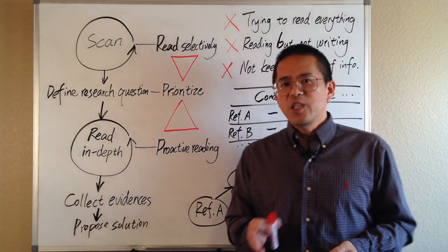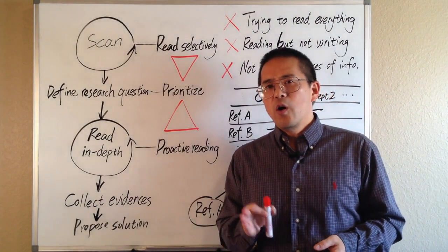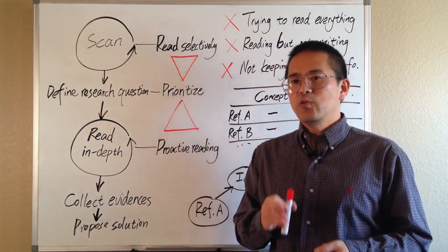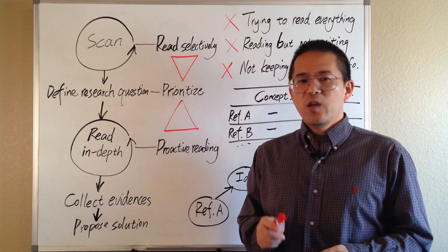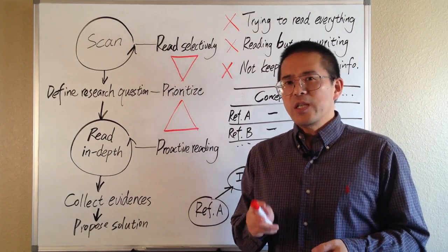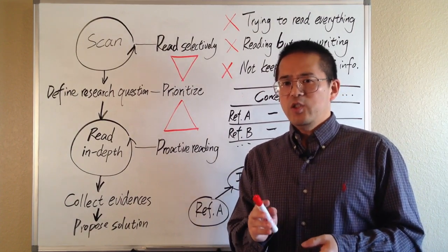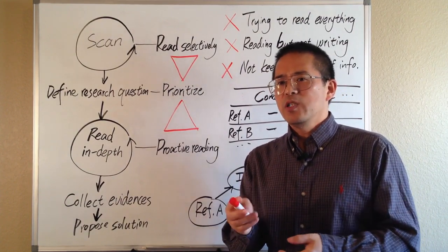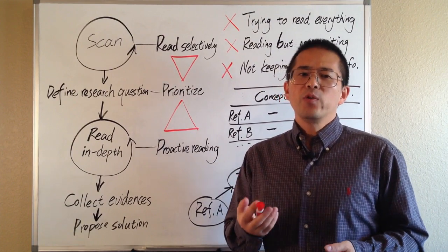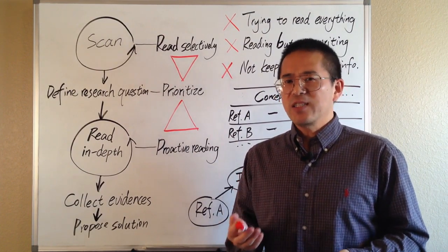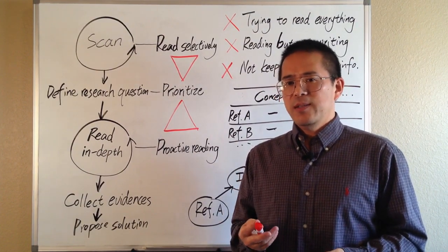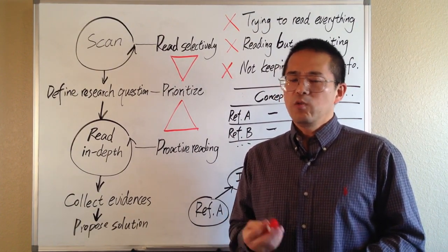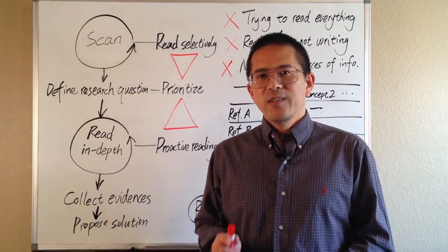The third tip is to write your own abstract for the important papers that you read. You may summarize which information in these papers is important to your research. It will help you to better organize these papers and use them effectively in your review. Thank you for watching.